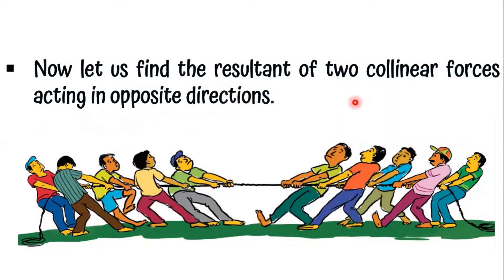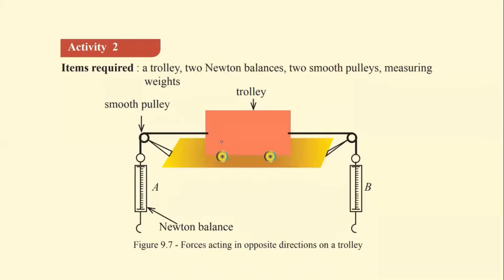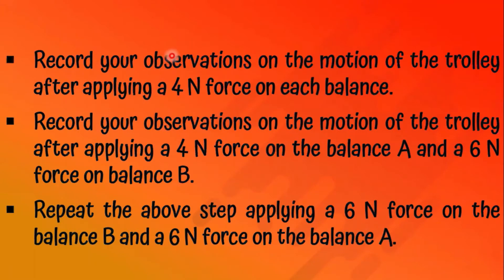Let us find the resultant of two collinear forces acting in opposite directions. This is Activity 2. Items required: a trolley, two Newton balances, two smooth pulleys, and measuring weights. Record observations on the motion of the trolley after applying 4 Newtons on each balance, then 4 N on balance A and 6 N on balance B, then 6 N on balance B and 6 N on balance A.